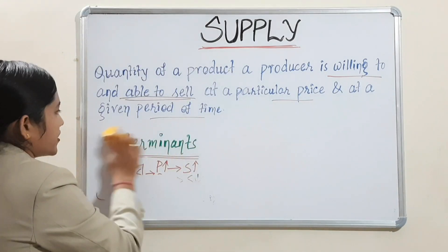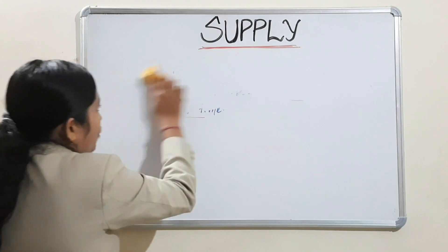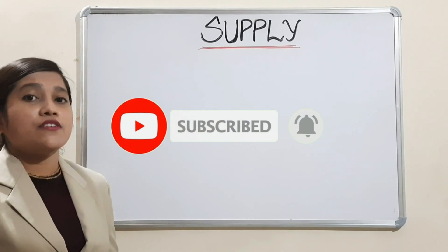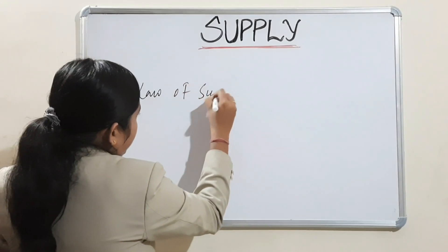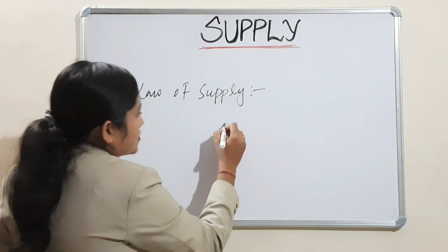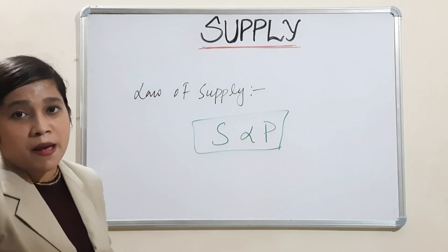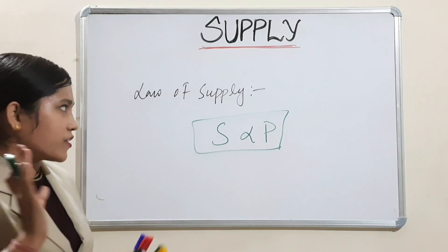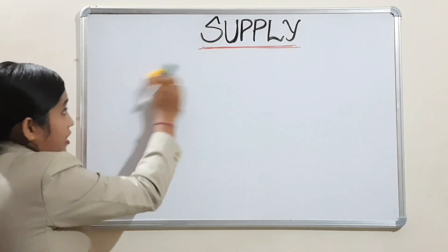Now we will move to the law of supply. According to the law of demand, price is inversely proportional to demand. But in case of law of supply, it is exactly opposite — supply is directly proportional to price. Always remember: demand is inversely proportional to price, supply is directly proportional to price.